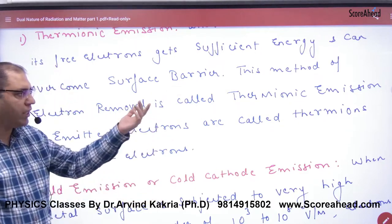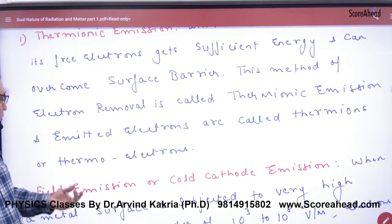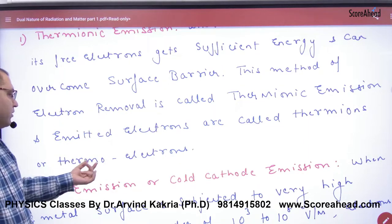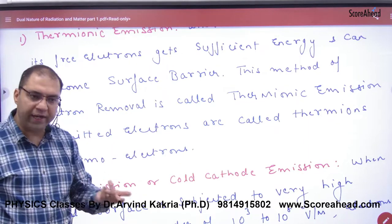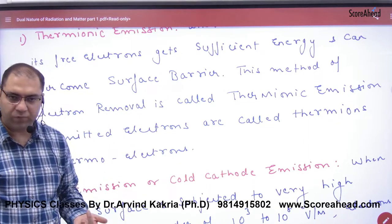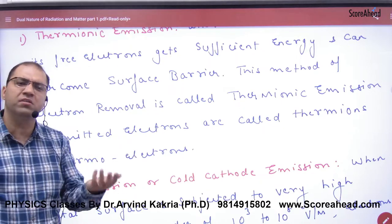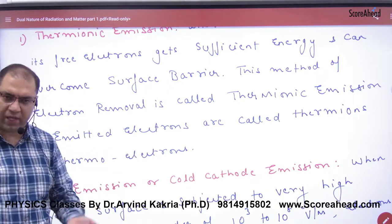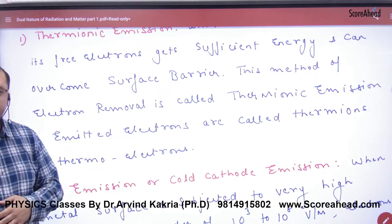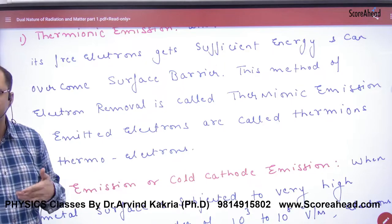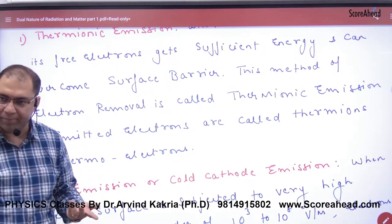The electrons that come out in this process are called thermions or thermoelectrons, and the process is called thermionic emission. This is one way electrons can come out of a metal surface — but our focus in this chapter is not on thermionic emission.